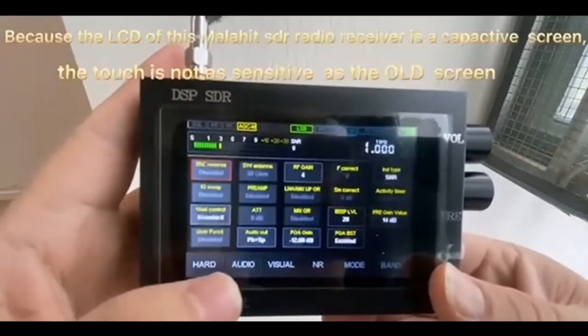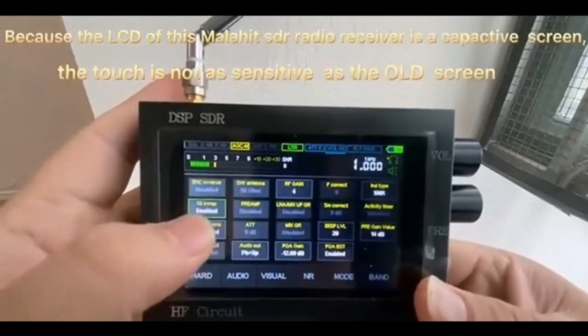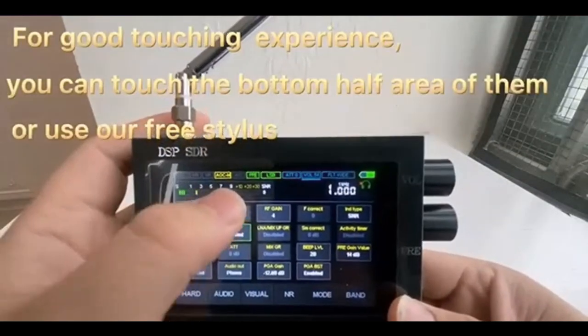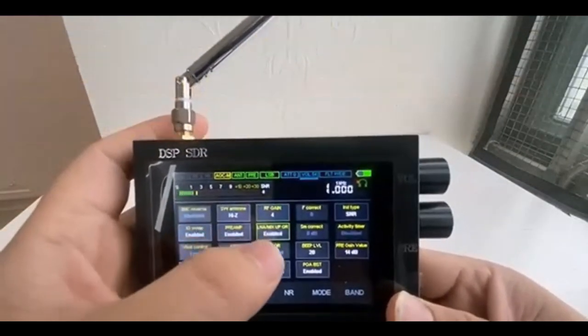The Malachyte receives frequencies from 50 kilohertz to 2 gigahertz and supports all major analog modulations, including AM, SSB, NFM, and WFM.